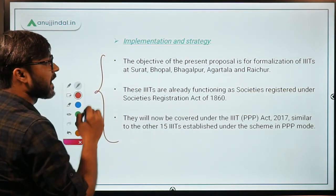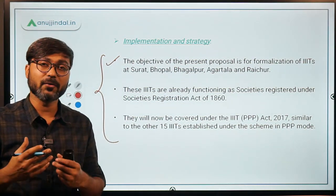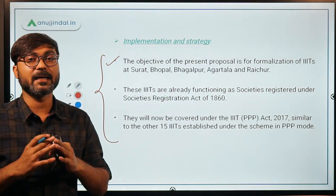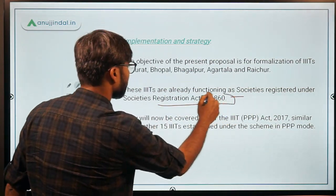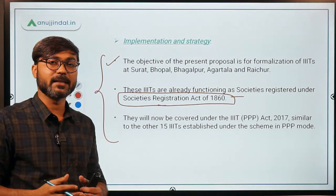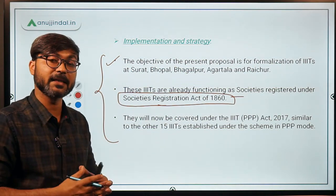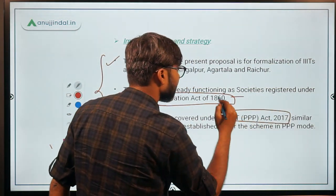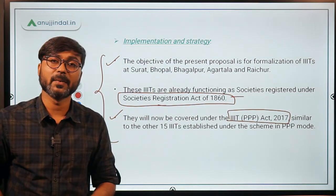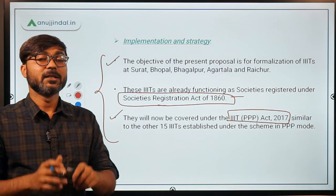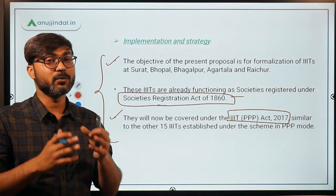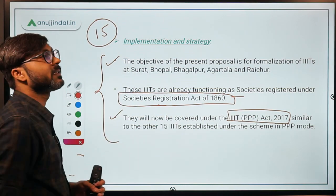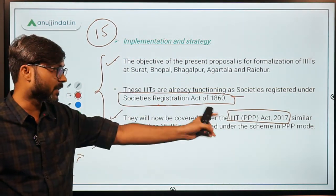The main objective of this bill is the formalization of these five IIITs. Currently, these five IIITs are registered as societies under the Society Registration Act of 1860. They will now be converted into formalized institutes — Institutions of National Importance — and will be covered under the IIIT PPP Act of 2017. That act covers all IIITs running under public-private partnership mode. At that time, fifteen IIITs were given the status of Institutions of National Importance; now five more will be added under the same act.